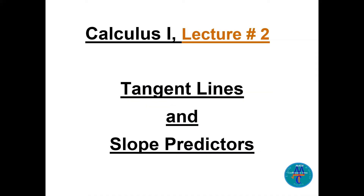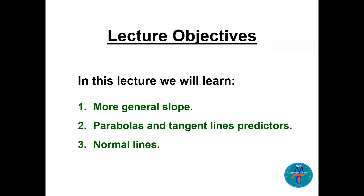Welcome, this is lecture number 2 in the Calculus 1 lectures on tangent lines and slope predictors. The objectives of this lecture include more general slope parabolas, tangent lines, predictors, and we will also define what we mean by normal lines.